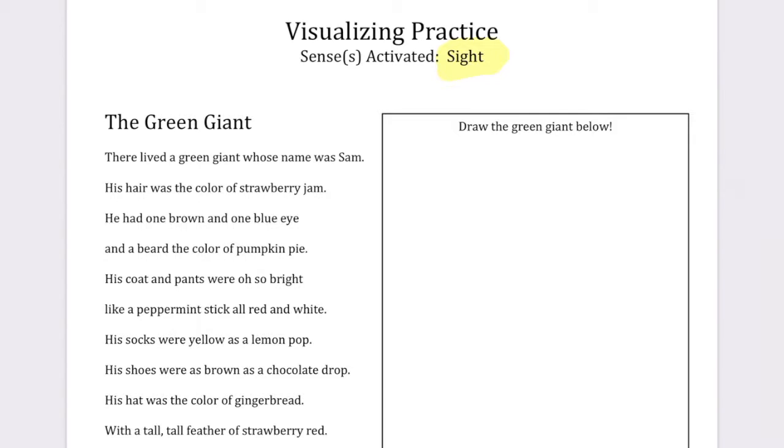The Green Giant. There lived a green giant whose name was Sam. His hair was the color of strawberry jam. He had one brown and one blue eye and a beard the color of pumpkin pie. His coat and pants were oh so bright, like a peppermint stick all red and white.